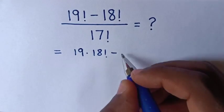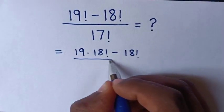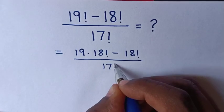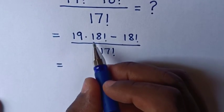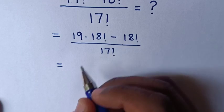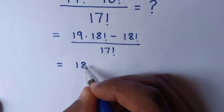Then minus this 18 factorial over this 17 factorial. Then this is equal to, in here 18 factorial is common, so we take 18 factorial out of bracket.